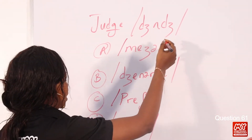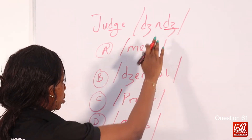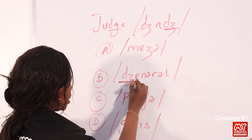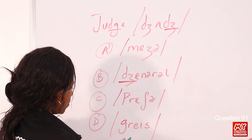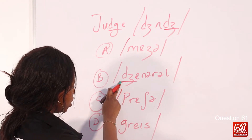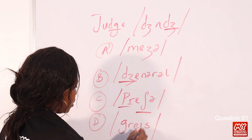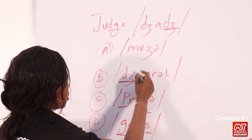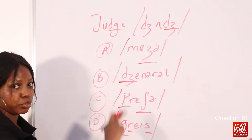DGE is articulated as the J sound. This is the voiced sound, and this is the voiceless counterpart. We have the same sound in the word 'general.' So we have measure, pressure, and grace. In measure we have SH, in pressure we have SH and P, in grace we have R and S. So the option similar to the one on the line is option B.